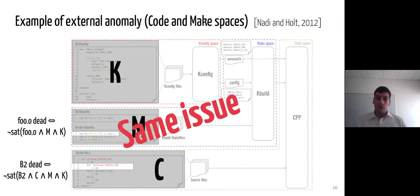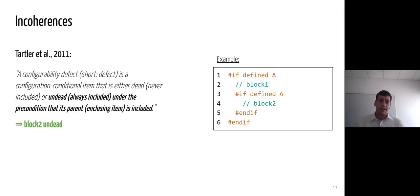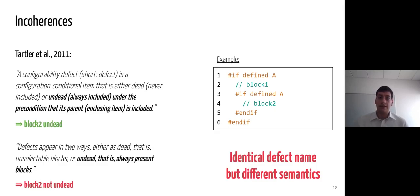Another problem preventing reusability is that some definitions are inconsistent. A first definition qualifies as an undead block a block that is always included under the precondition that its parent is included. For example, block 2 has the same if condition as its parent block 1, which makes it undead. However, a second definition states that a block is undead if it is always present. But by not selecting feature A in our example, block 2 is not selected — it is therefore not always present, and thus is not qualified as undead according to this second definition.